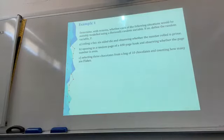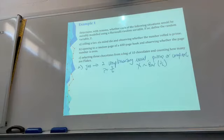Example one. Determine with reasons whether each of the following situations would suitably model using a Bernoulli random variable. Rolling a fair six-sided die and observing whether the number roll is prime. Six numbers, prime number is two, three, and five. Non-prime is one, four, and six. Is it a Bernoulli distribution? Yes. Therefore, yes, two complementary events, prime or composite.